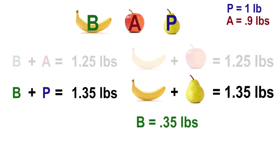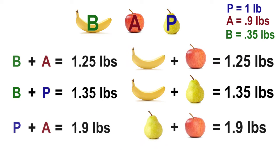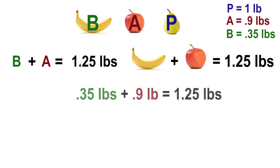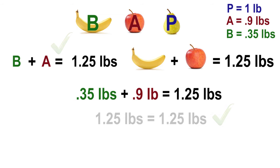Let's double check the weight of the banana by using the first equation. The weight of the banana was 35 hundredths of a pound. The weight of the apple was 9 tenths of a pound, which equals 1 and 25 hundredths pounds. This checks out.